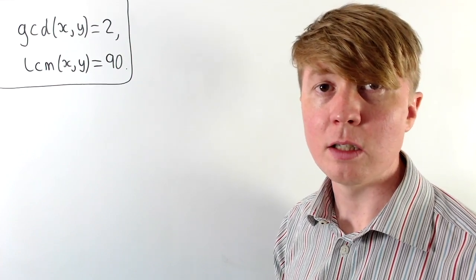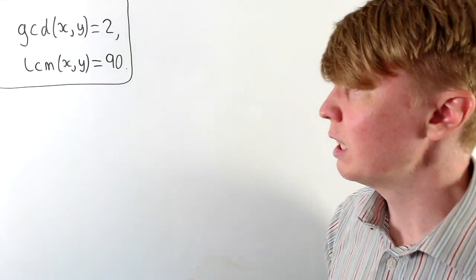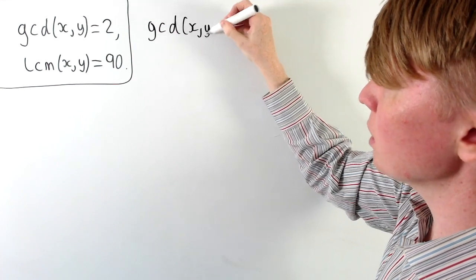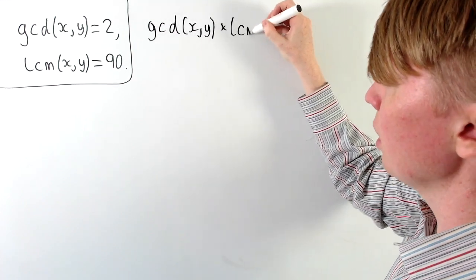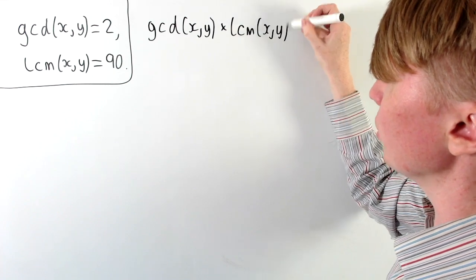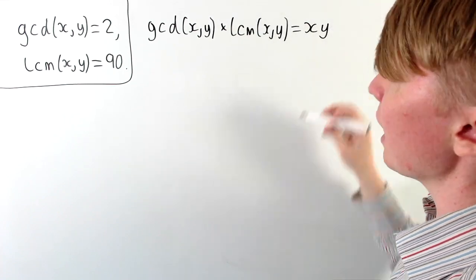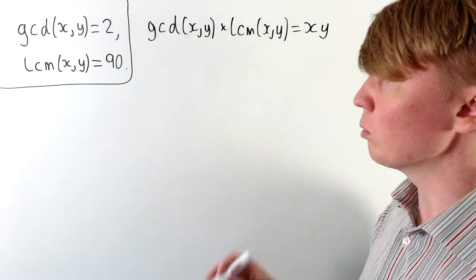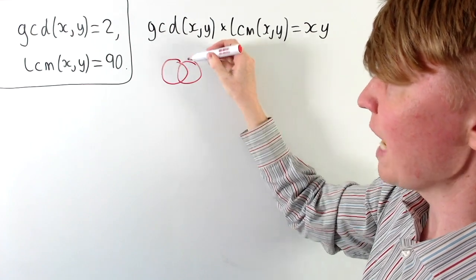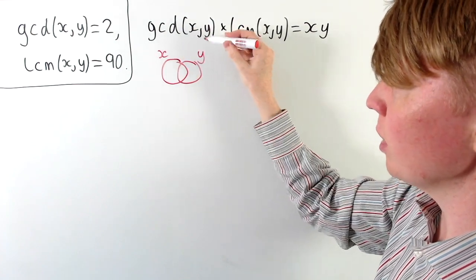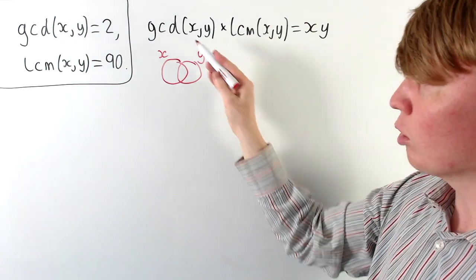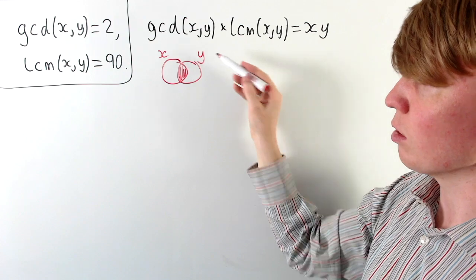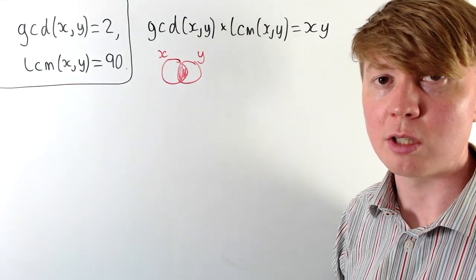There's a key insight that will make things much easier: if you multiply together the greatest common divisor and the lowest common multiple of x and y, you get the product x times y. To see why informally, think in terms of prime factors of x and y. If you put all prime factors of x and y into a Venn diagram, the greatest common divisor is what you get in the middle — all prime factors common to both x and y, multiplied together.